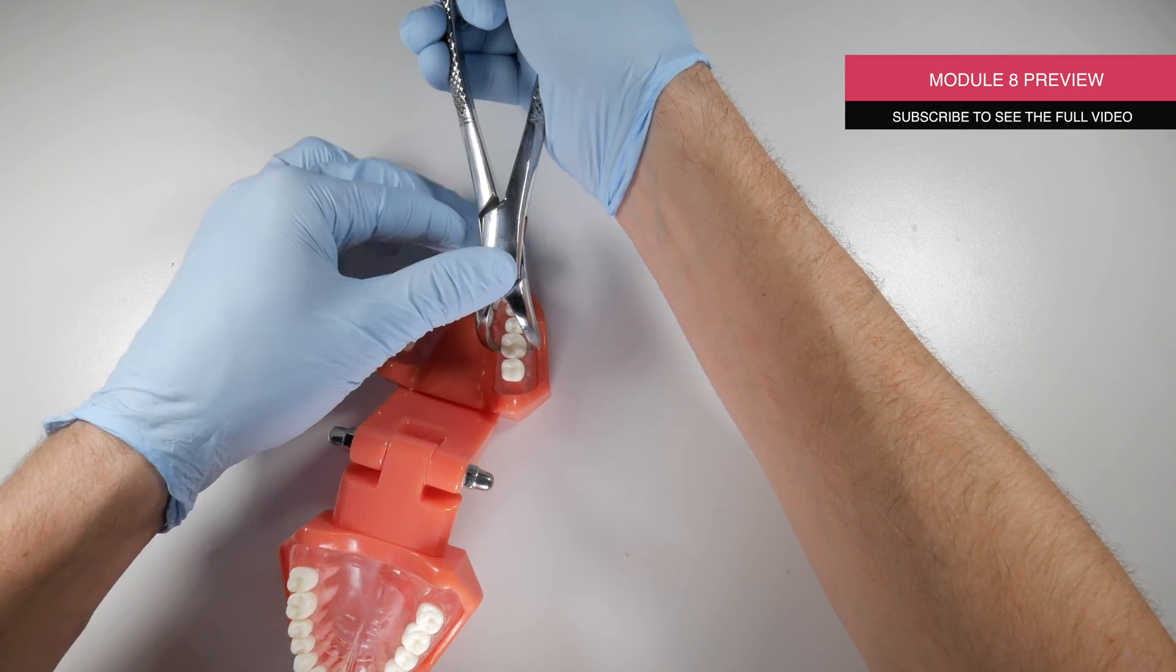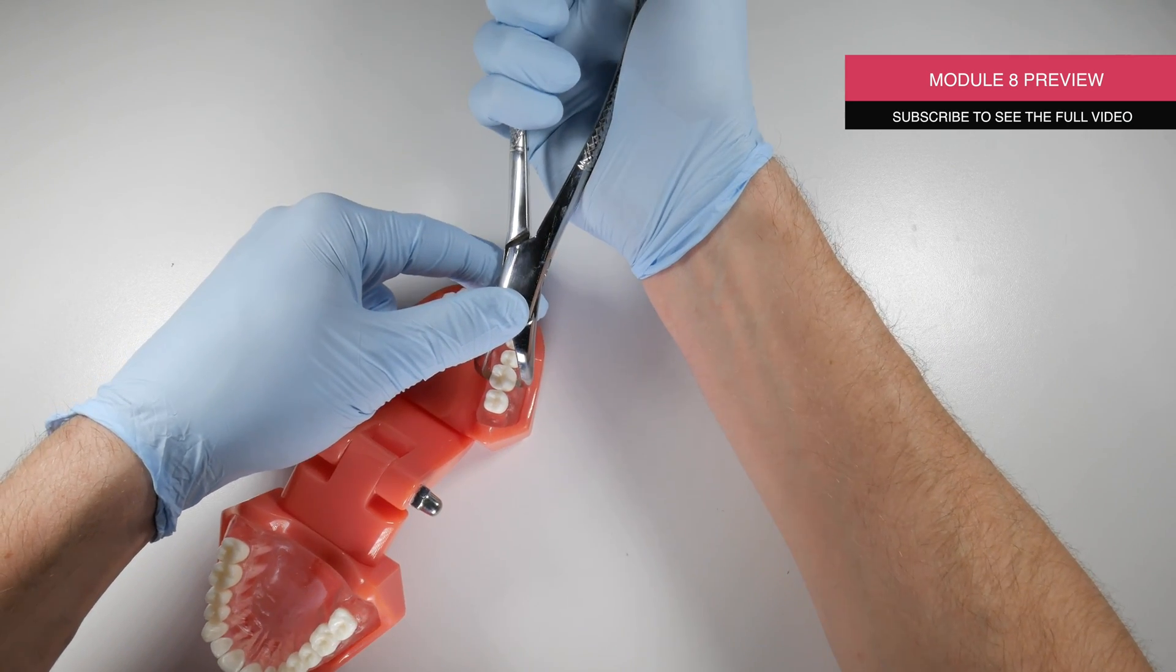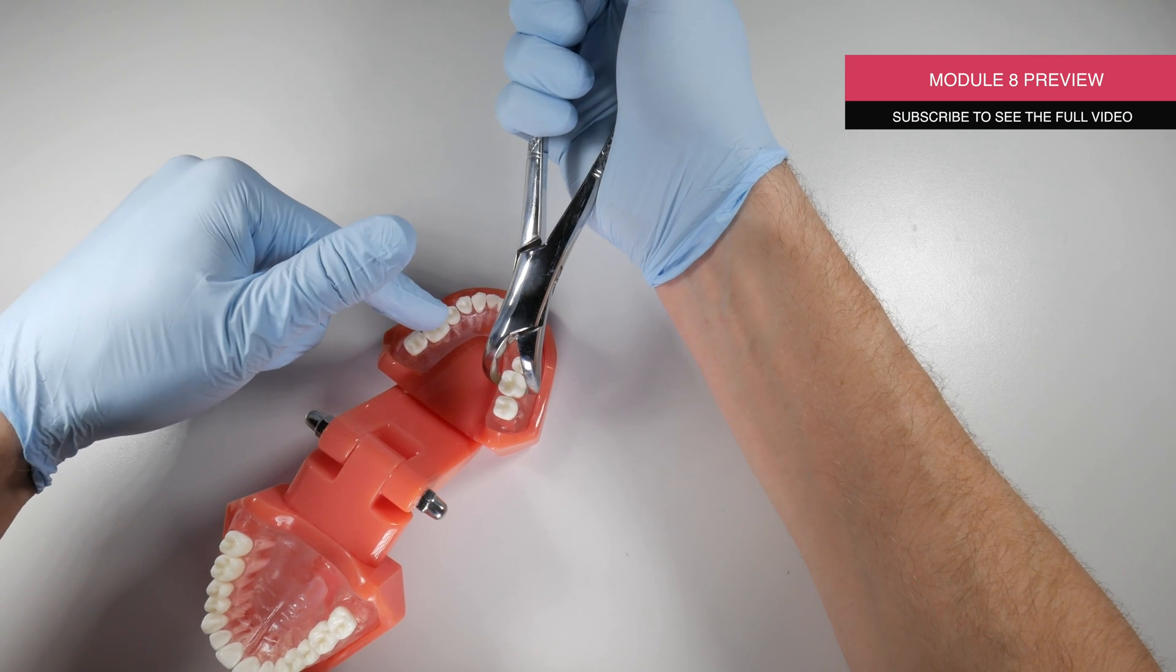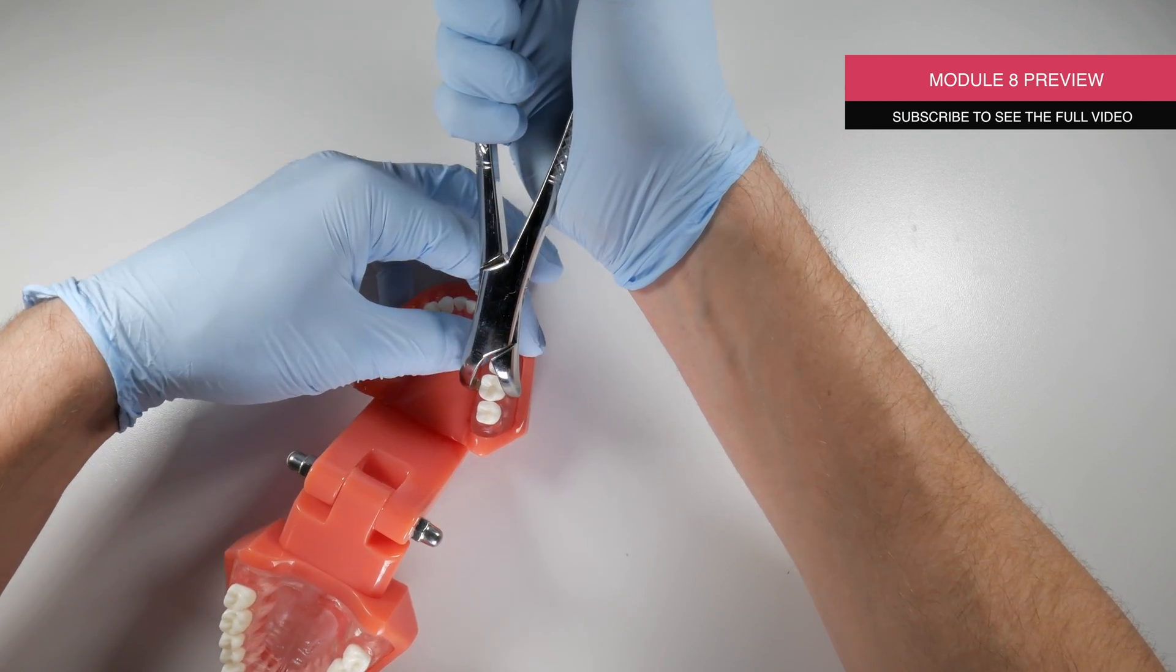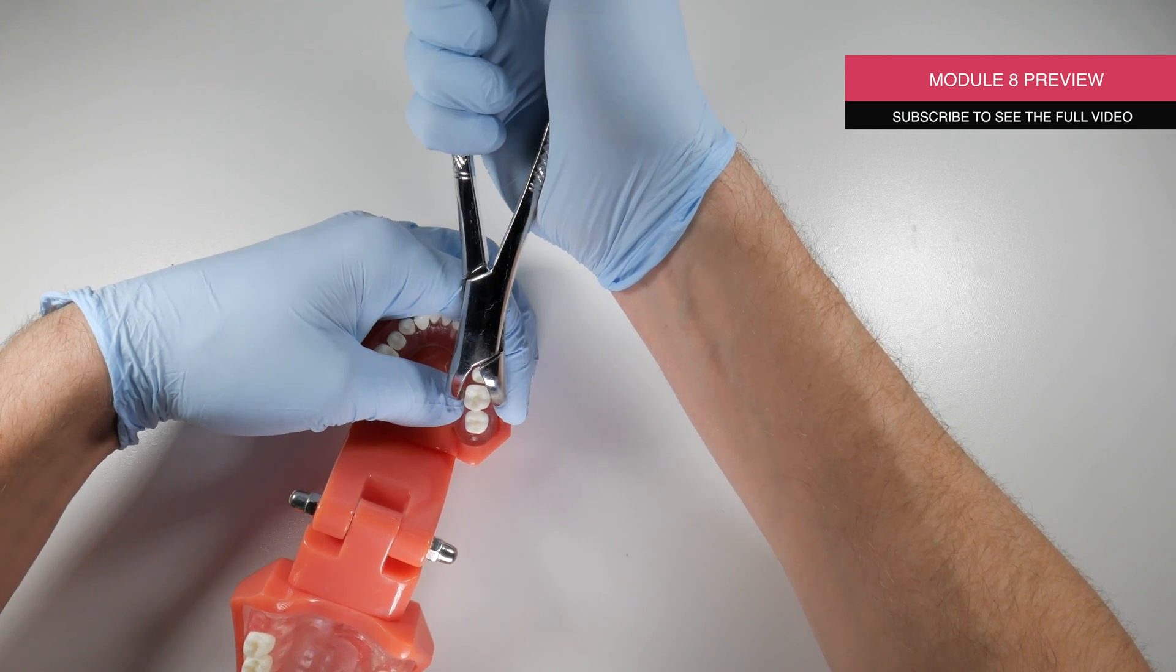Make sure that you're pushing on the top of here, get the forcep down between the roots and you're going to have a bite block in place to give your patient something to support their teeth. You're also going to be holding under their jaw and pinching next to their tooth.